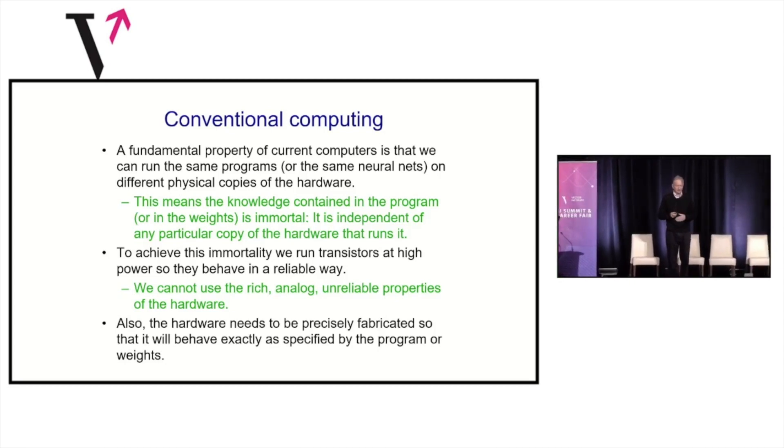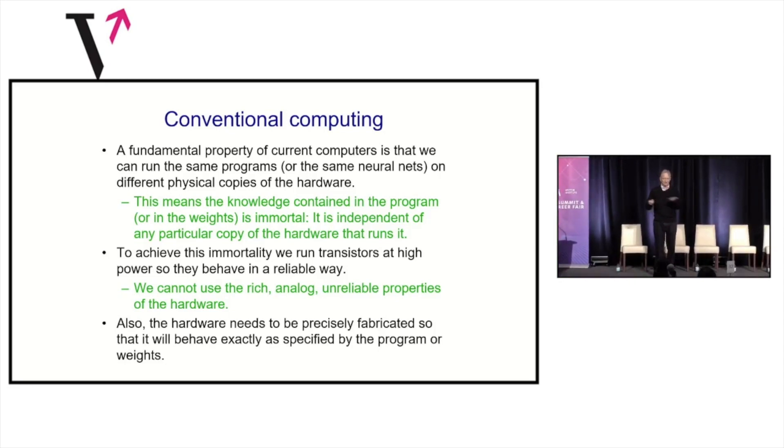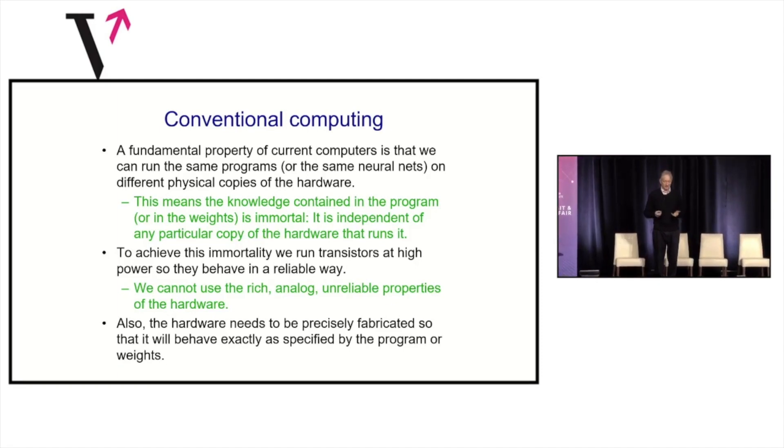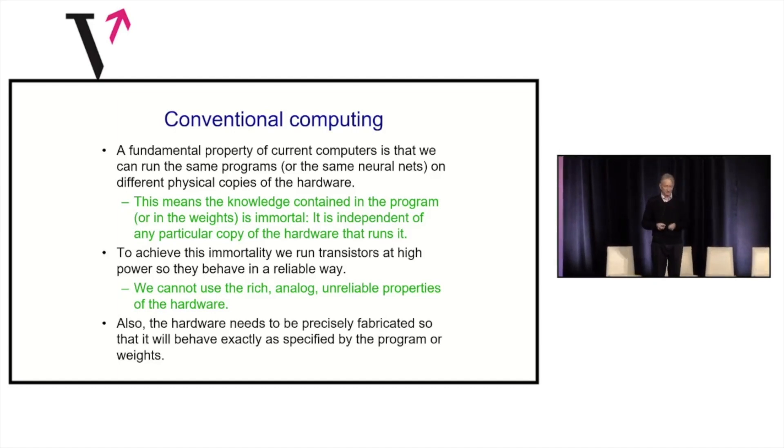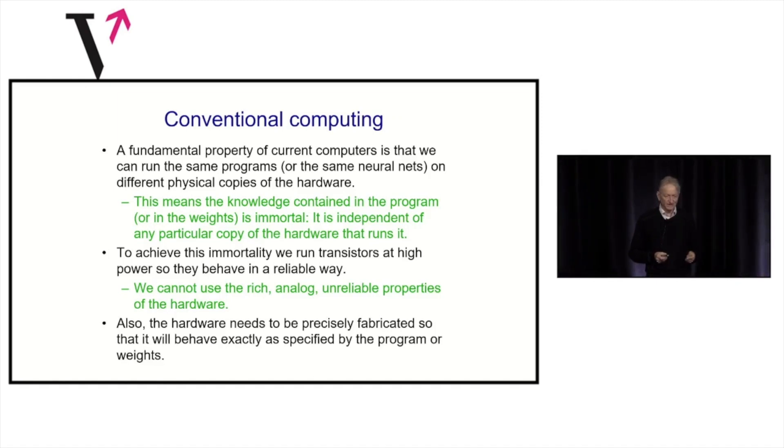The point about that separation is, you can have knowledge in a program or in a set of weights, and you can run the same knowledge on a different chip or a different computer. So, when the hardware dies, the knowledge doesn't die. But you achieve that at a great cost. That's a wonderful thing to have. It means you can make a million copies of the same program and send them to a million cell phones. But to do that, the computer has to act in a reliable way. So, we have to run transistors at high power, so they're nice and digital. And we need to fabricate the hardware so it does what you expect it to do. And so, another copy of the hardware will do exactly the same thing.